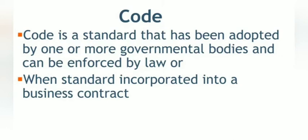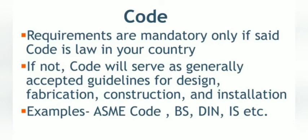Now let us learn about the code. When a governmental body adopts a standard and makes it legally enforceable, or when a standard has been incorporated into a business contract, the standard becomes a code. For example, ASME codes are legally enforceable in many US states, whereas in other parts of the world they are not legally enforceable, but such countries have their own similar codes. The requirements mentioned in a code are mandatory only if the code is adopted as law by a regulatory body or is part of a business contract.